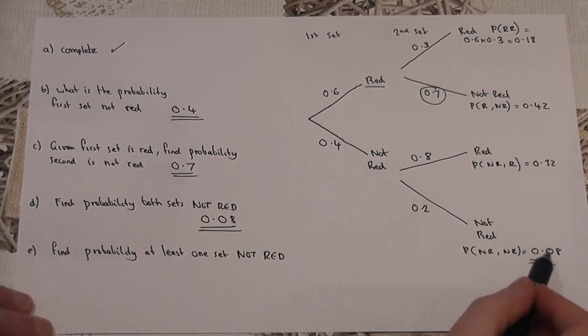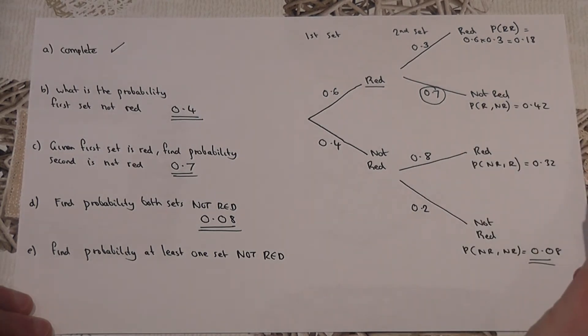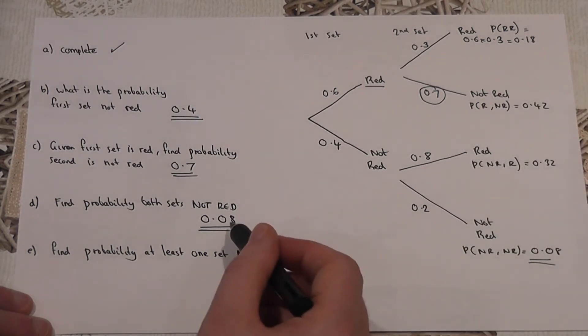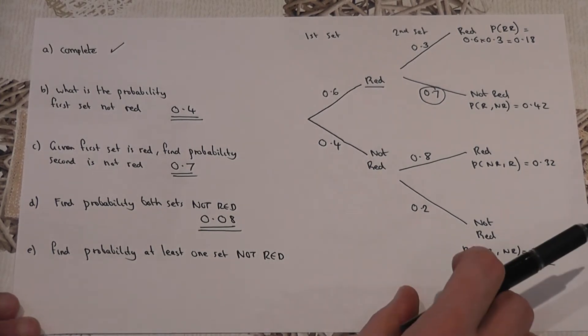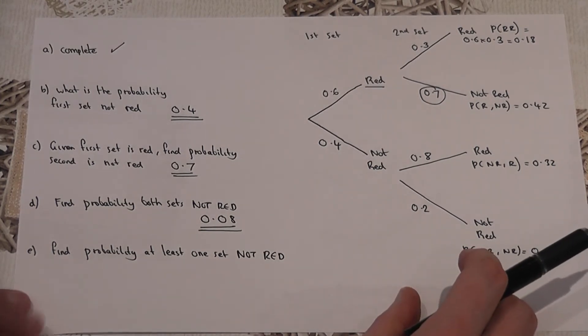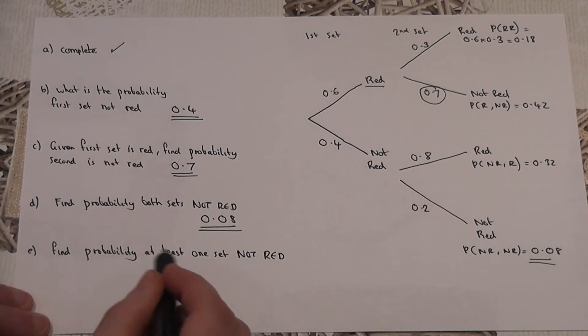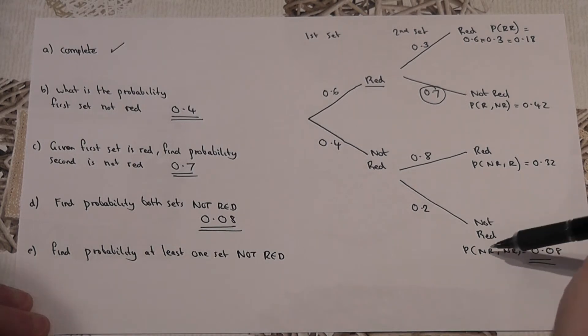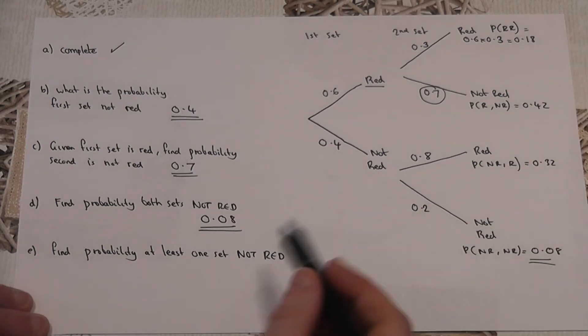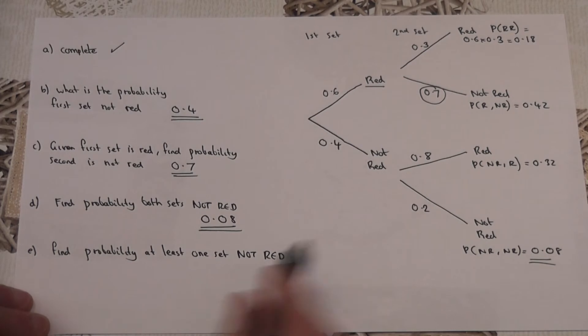A nice neat presentation of the answers. Then use the correct ones to answer the relevant question. And then part E, find the probability that at least one of the sets is not red. So let's look down. In these options, which one has got at least one set not red? Well, there's definitely a not red here.